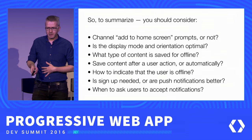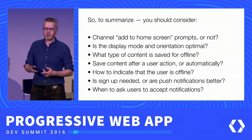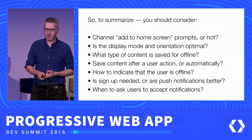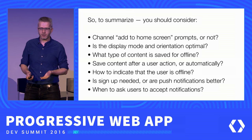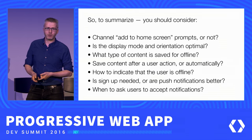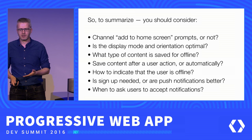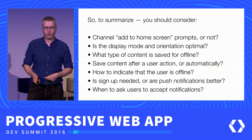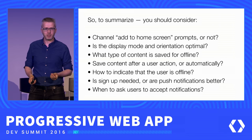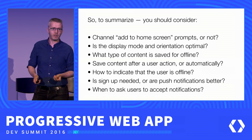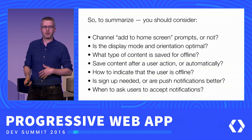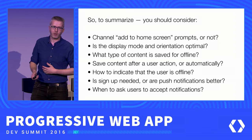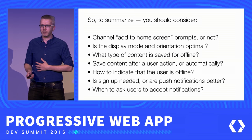To summarize, these are the things you should consider when building a progressive web app: whether to channel Add to Home Screen prompts or not; whether the display mode and orientation of your site is optimal; what type of content to save offline; whether to save content after user action or automatically in the background; how to indicate that a user is offline; and when to ask users to accept notifications so that you can interact further with them.